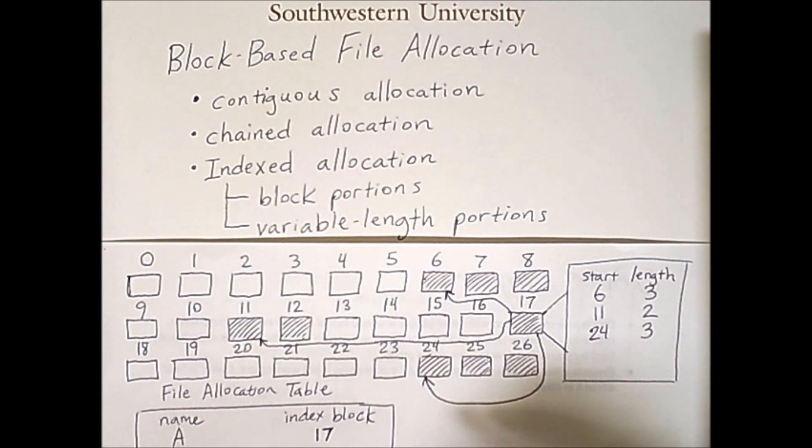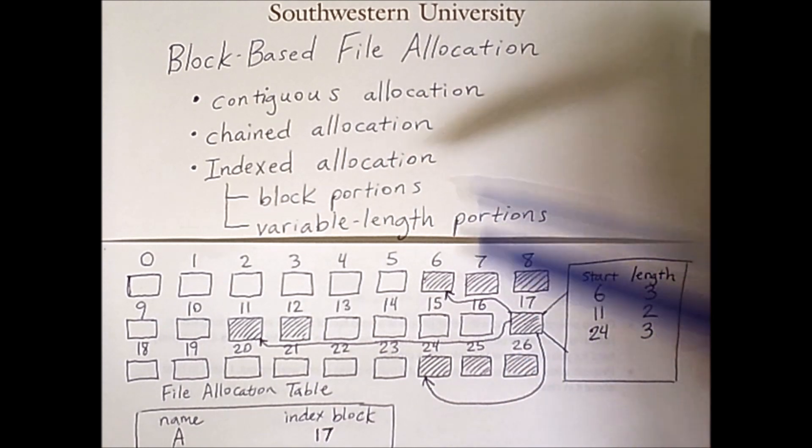So this approach typically needs fewer pointers however we now have to have space in the index node to store the lengths. So there are trade-offs between this approach and block portions.